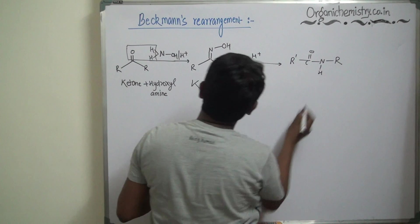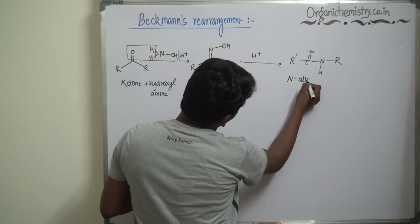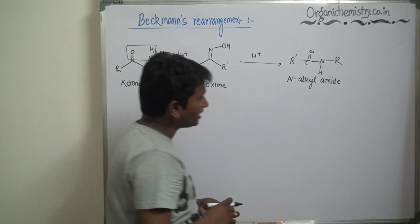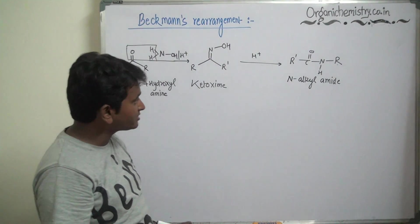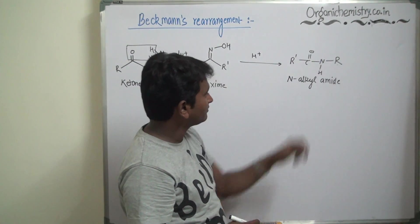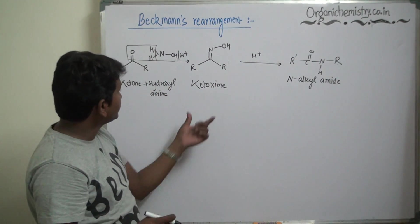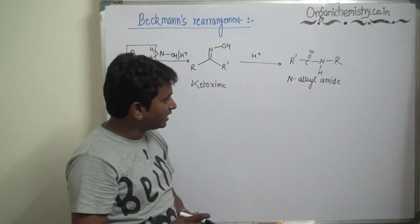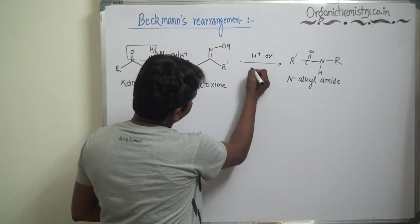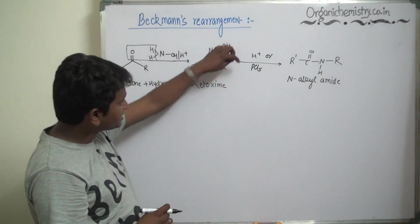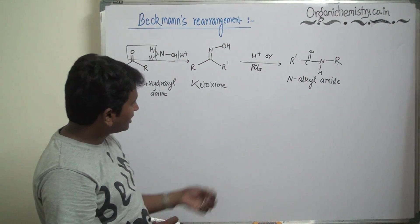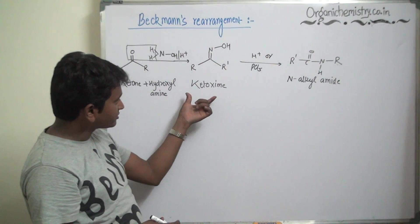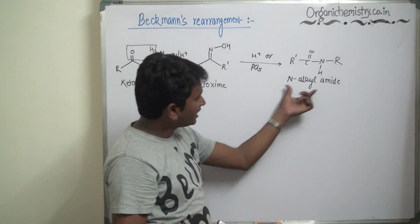N-alkyl amide. This R may be aliphatic, may be aromatic, but important is this nitrogen must be attached to the carbon. So substrate for Beckmann's arrangement is ketoxime, the reagent is acid, and product is N-alkyl amide. Acid may be H+ or PCl5. So substrate ketoxime, the reagent acid, product is N-alkyl amide.